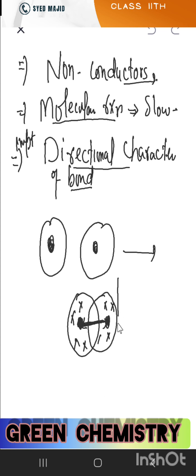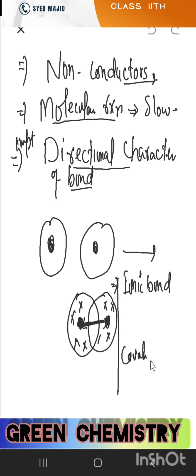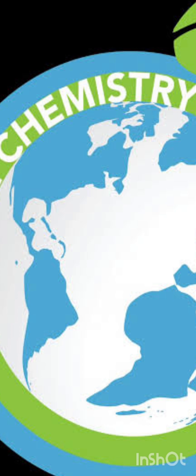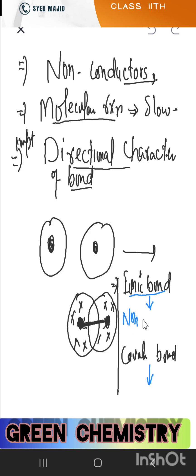An important question: ionic bond is non-directional in nature, while covalent bond is directional in nature. Remember this distinction.